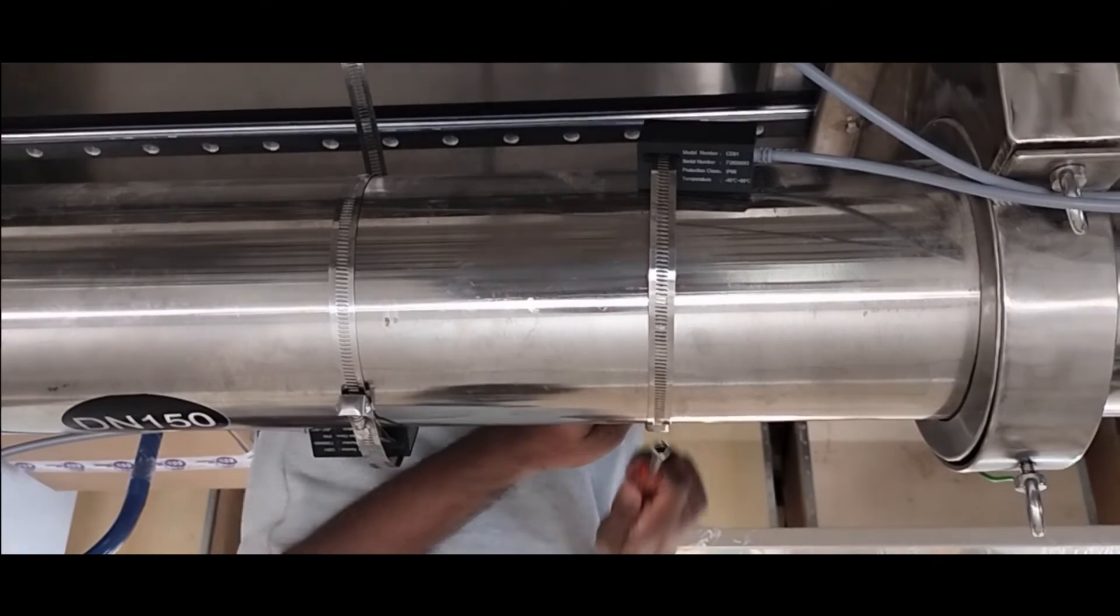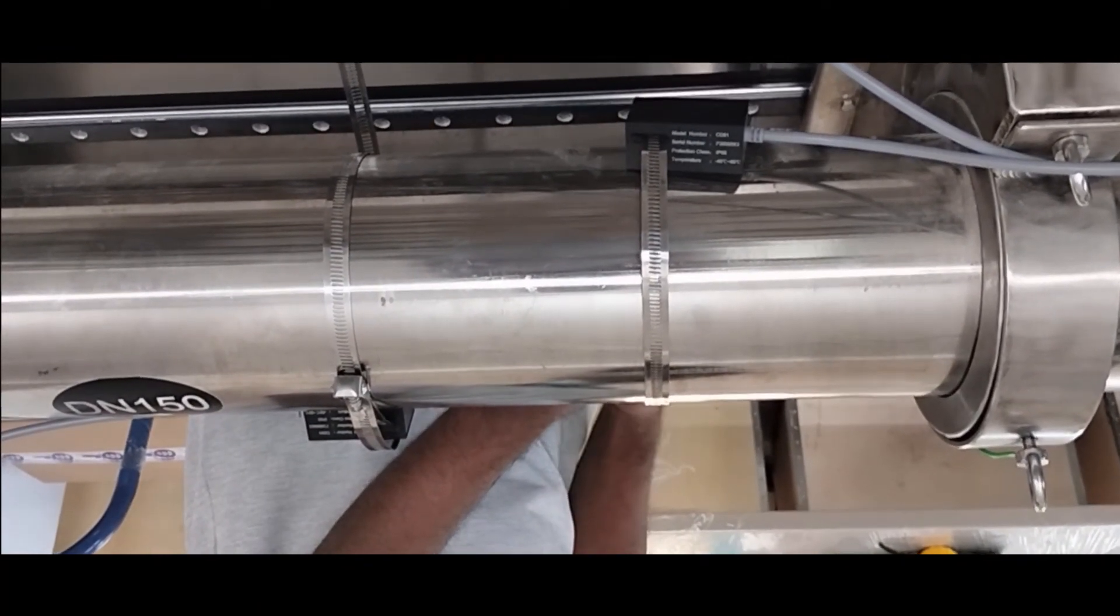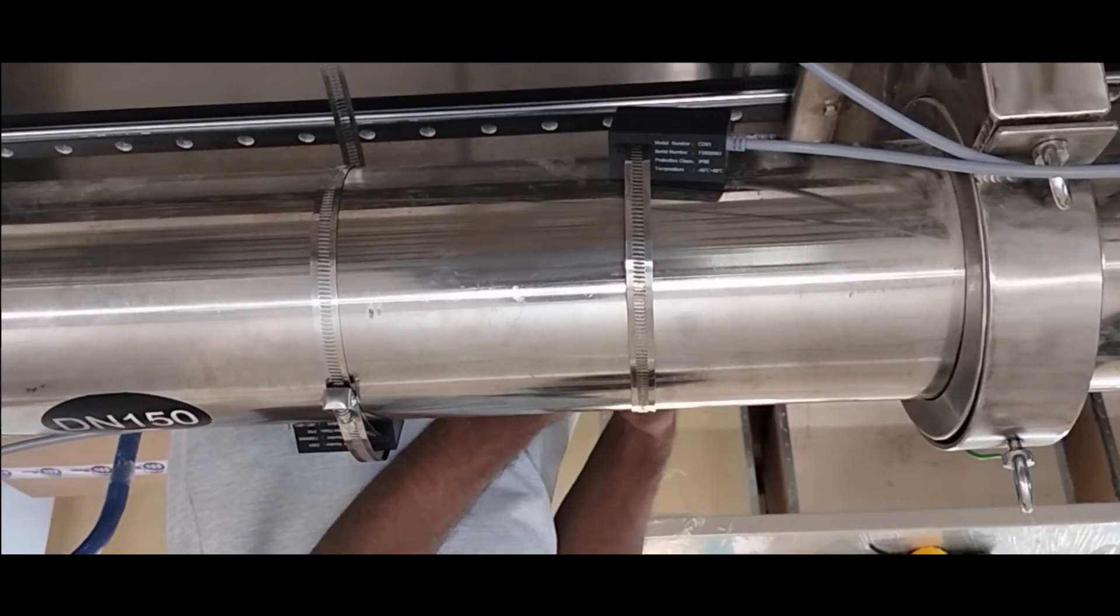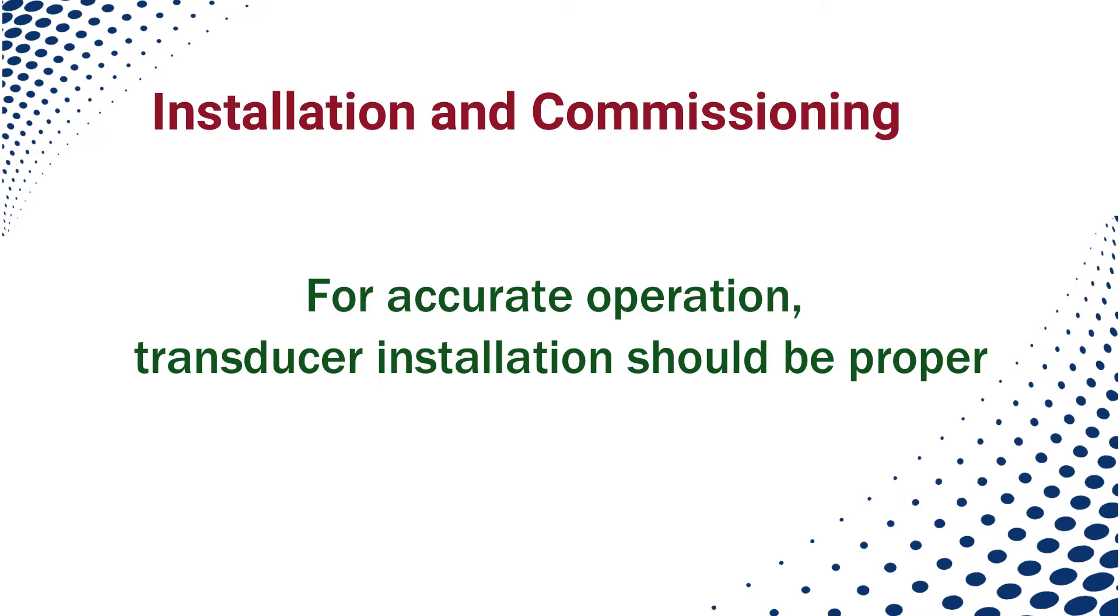Then fix the sensor on the pipe surface and tighten the pipe strap. Here the installation is done. For the meter's accurate operation and high reliability, the transducer installation should be proper. To ensure that, there is a provision provided in the meter. Have a look at that also.